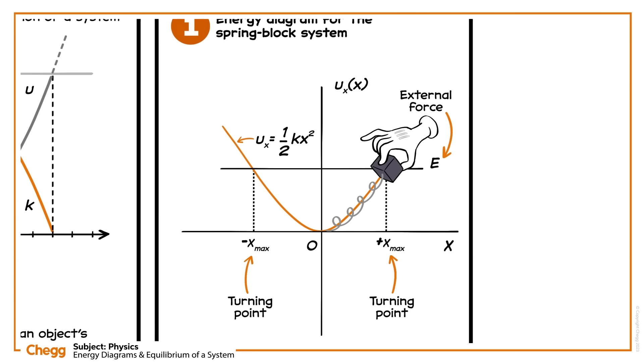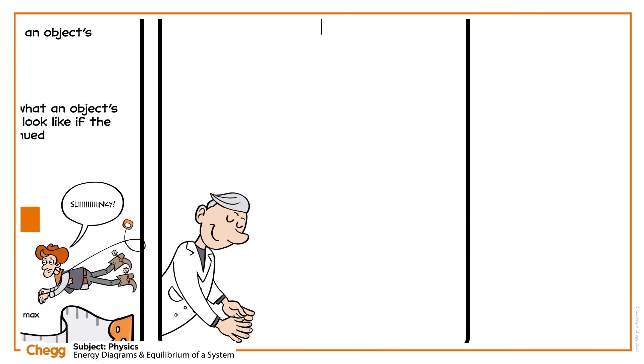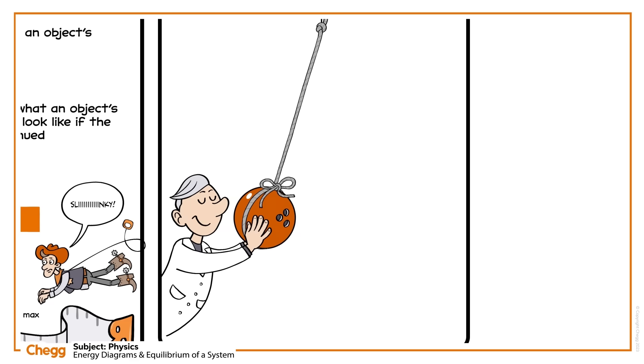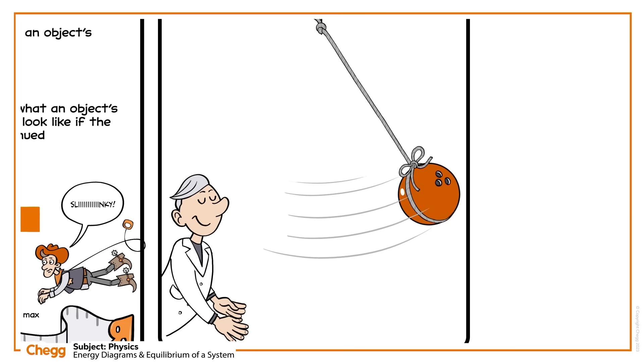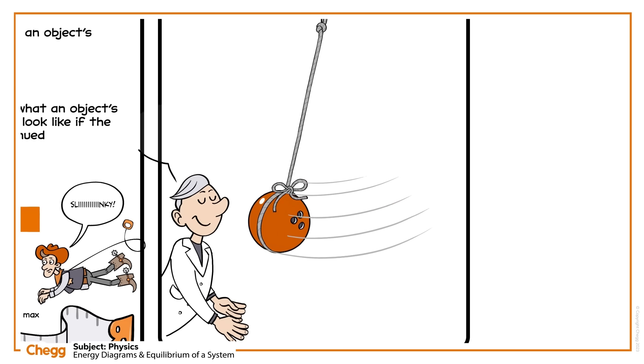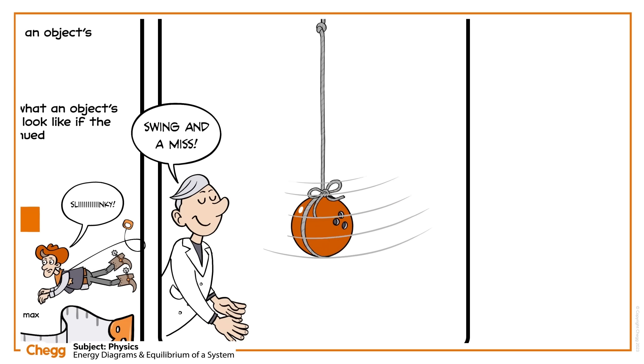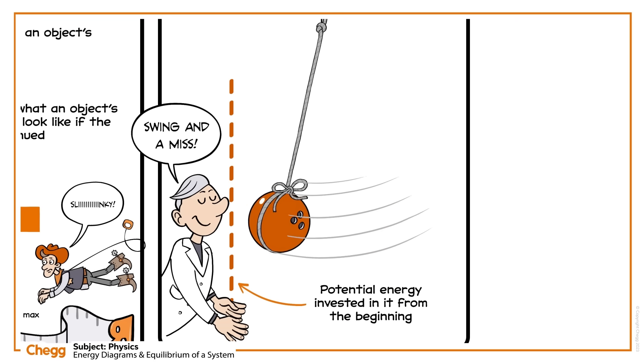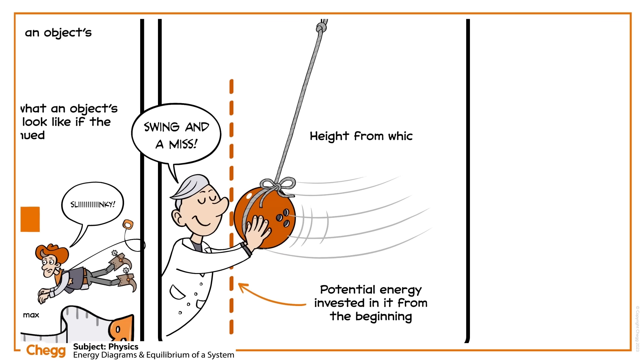You may have seen an experiment where a professor hangs a bowling ball from a rope attached to the ceiling. They lift the bowling ball to their face and release it. You expect the ball to come back and hit them, but it never does, because it can only swing as far as the potential energy invested in it from the beginning, namely the height from which you release the bowling ball. The same thing happens with this spring block system.